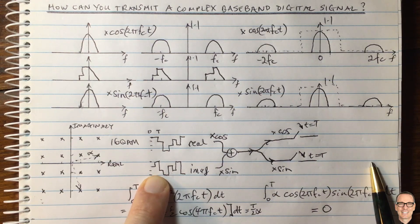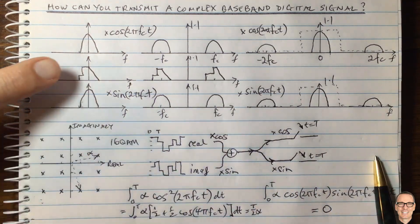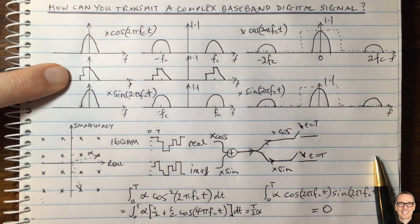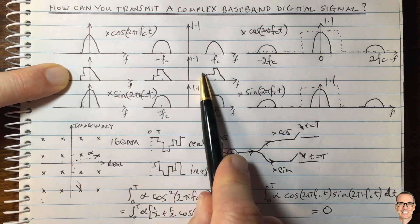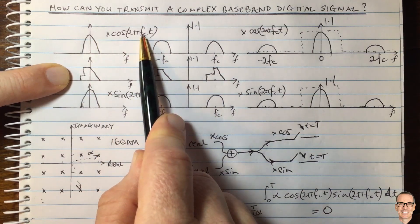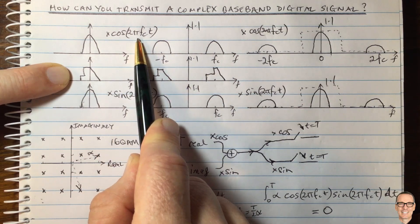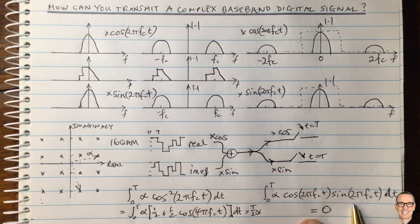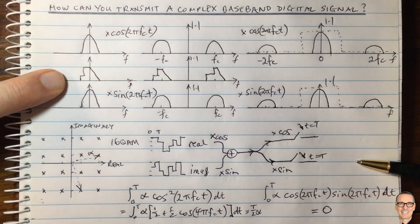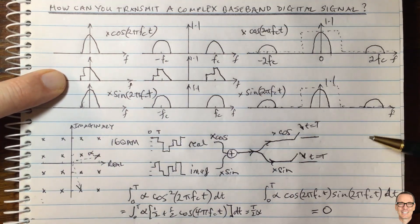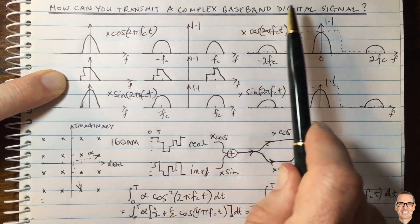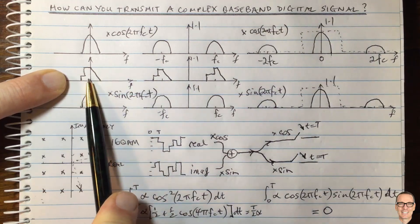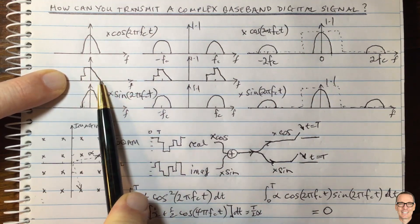We're not just mixing in the traditional way for amplitude modulation by a single carrier — now we have carriers with phase offsets: cosine and sine, both at the same carrier frequency FC. They do mix in the channel, but because one is a cosine and one is a sine, and because of the orthogonality property over the digital time period capital T, they cancel each other out. So the real part can be received correctly at one output, and the imaginary part correctly at the other. Therefore, at the receiver, you can reconstruct your complex baseband digital signal.